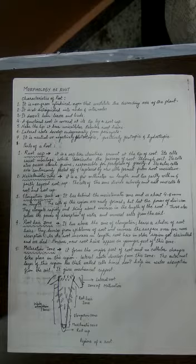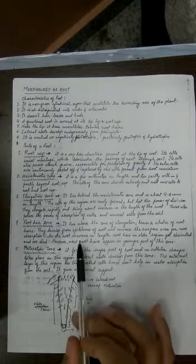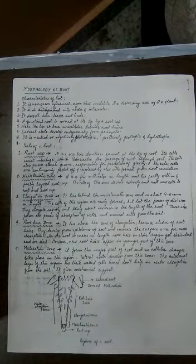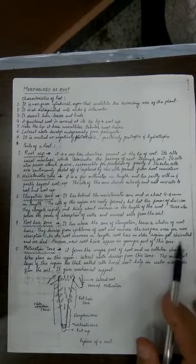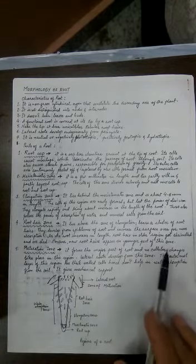These cells also possess the power of absorption of water and mineral salts from the soil. The fourth zone is the zone of root hairs — it lies above the zone of elongation and bears a cluster of root hairs. Remember, these are single-cell root hairs; they develop from the epiblima, which is the term used for epidermis in the case of roots, and they increase the surface area for more absorption. As the root increases in length, root hairs in the older portion die, becoming brown and shriveled before being shed.